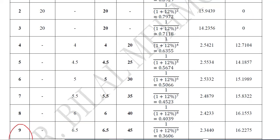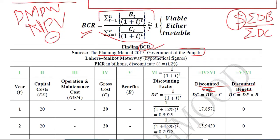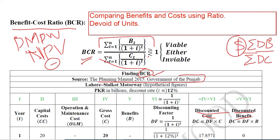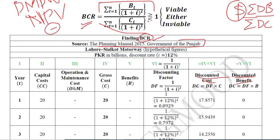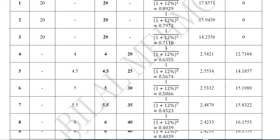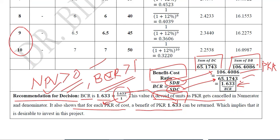In this way we have learnt the second discounted measure of project worth, calculated simply by dividing the sum of discounted benefits by the sum of discounted costs. The selection criteria is that BCR should be greater than 1; equal to 1 or less than 1 are not desired situations. Greater than 1 is the desired outcome. This is how we calculate the benefit-to-cost ratio. Thank you.